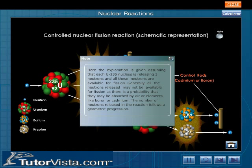Rods of cadmium or boron are used to absorb the other two neutrons. One of the applications of the controlled chain reaction is the generation of electricity.